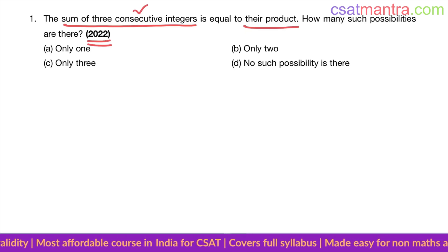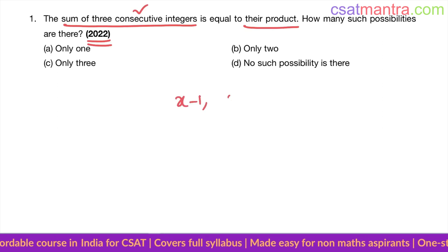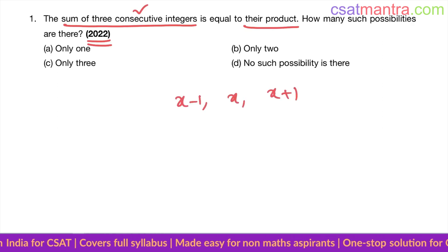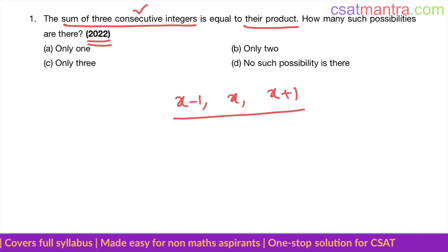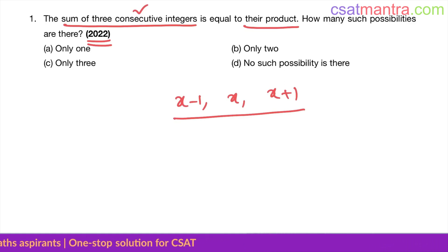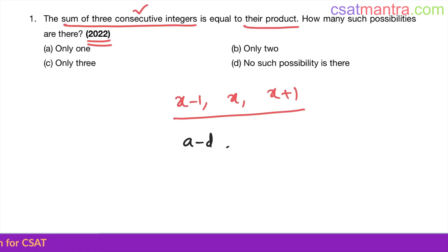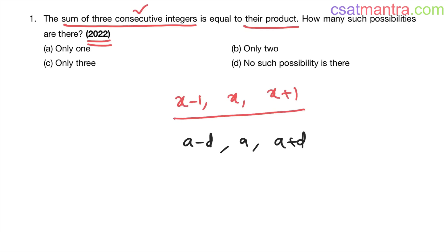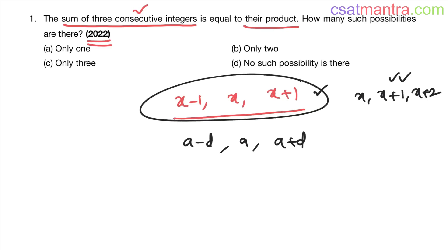To make the problem simpler, I'm taking the three consecutive integers as x-1, x, and x+1. Here x is an integer, so x-1 and x+1 are also integers. These three terms are in AP. In sequences and series, when three terms are in AP, we take them as a-d, a, a+d. We take them this way to make the problem simpler. You could take x, x+1, x+2, but that makes the problem a bit lengthier.